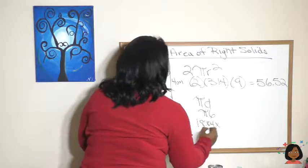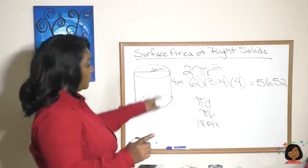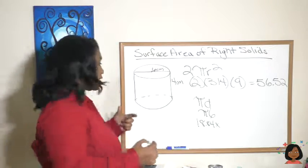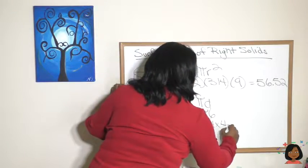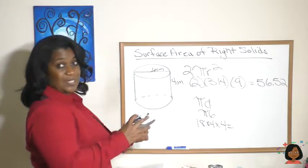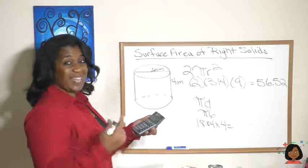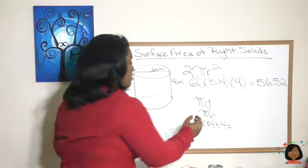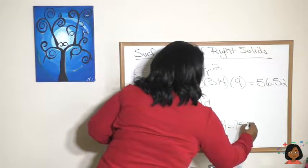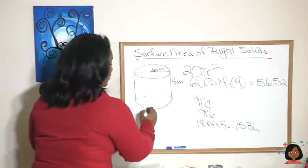And we're going to multiply that by my width of my rectangle which is four. Let's do that in the calculator. 18.84 times a four gives me an area of 75.36.